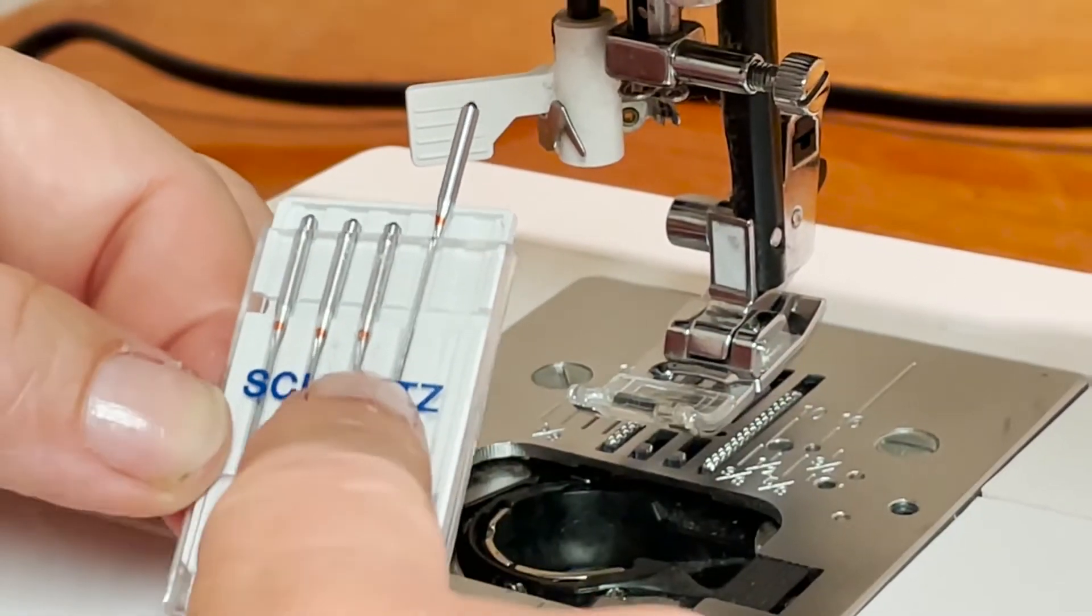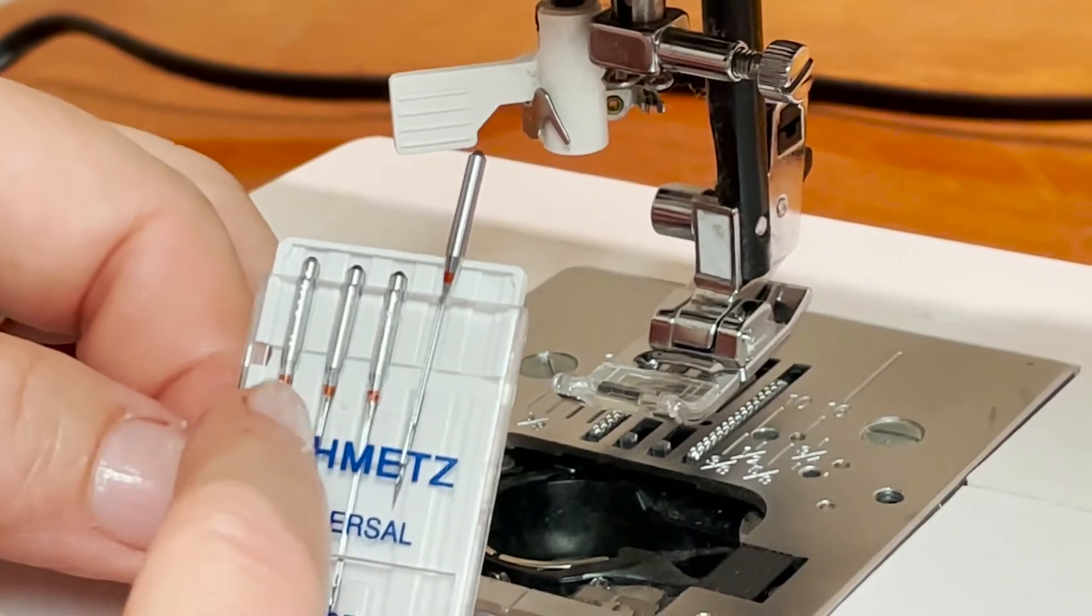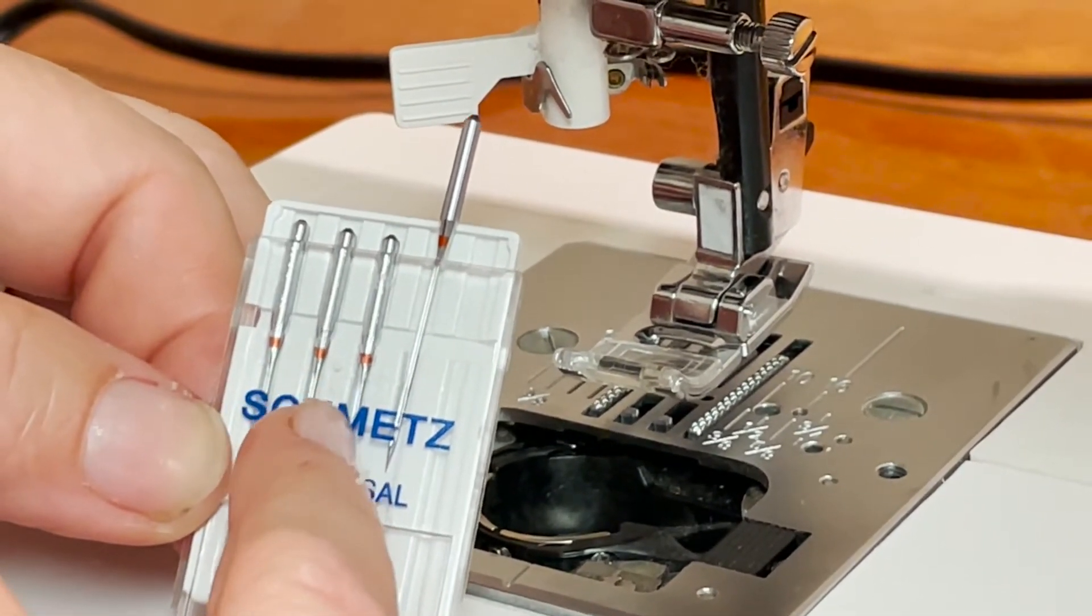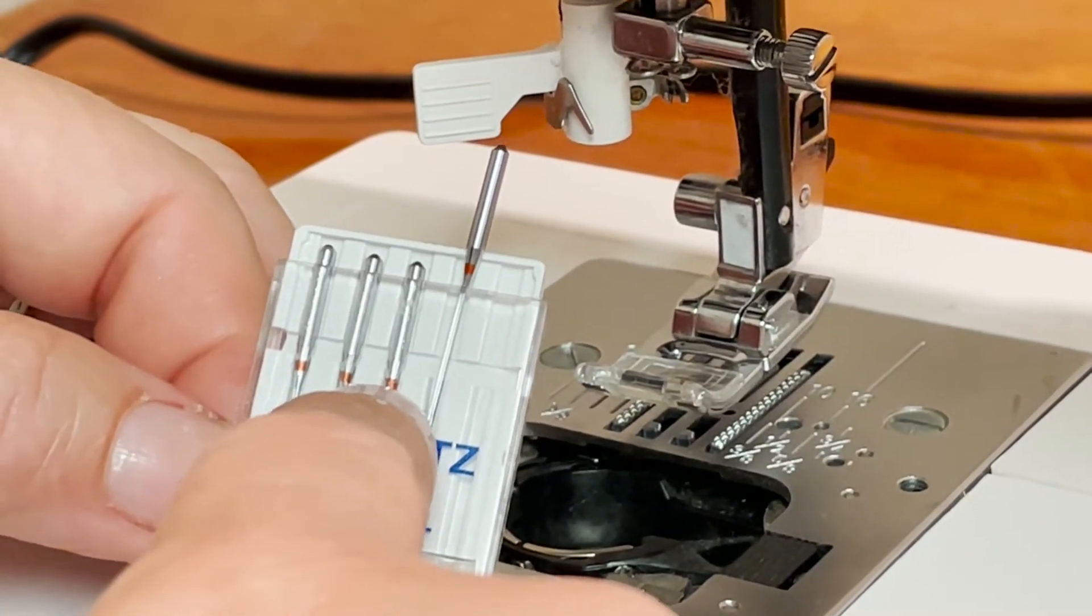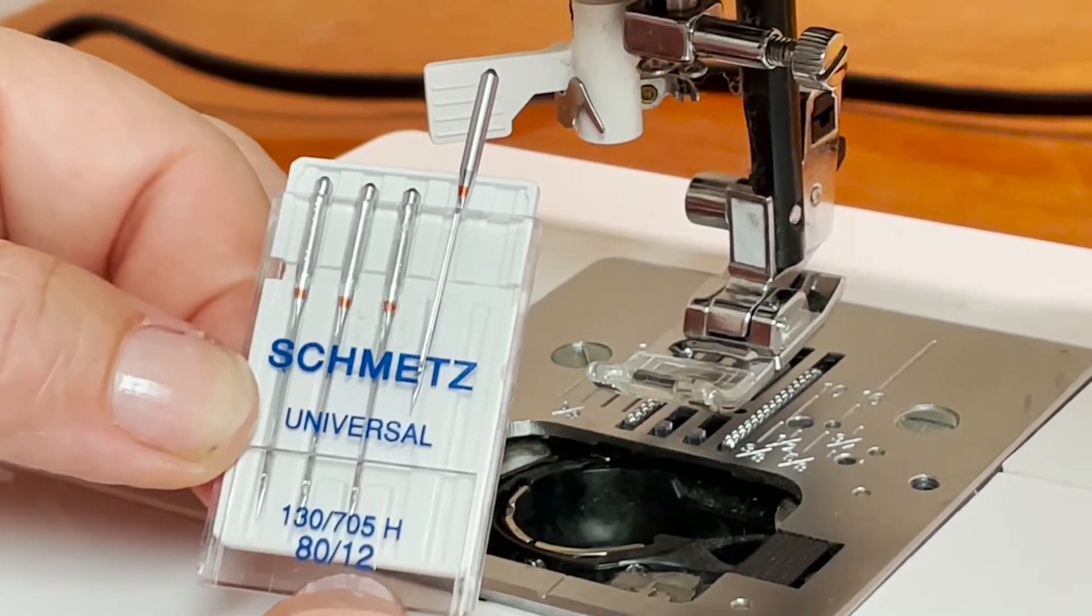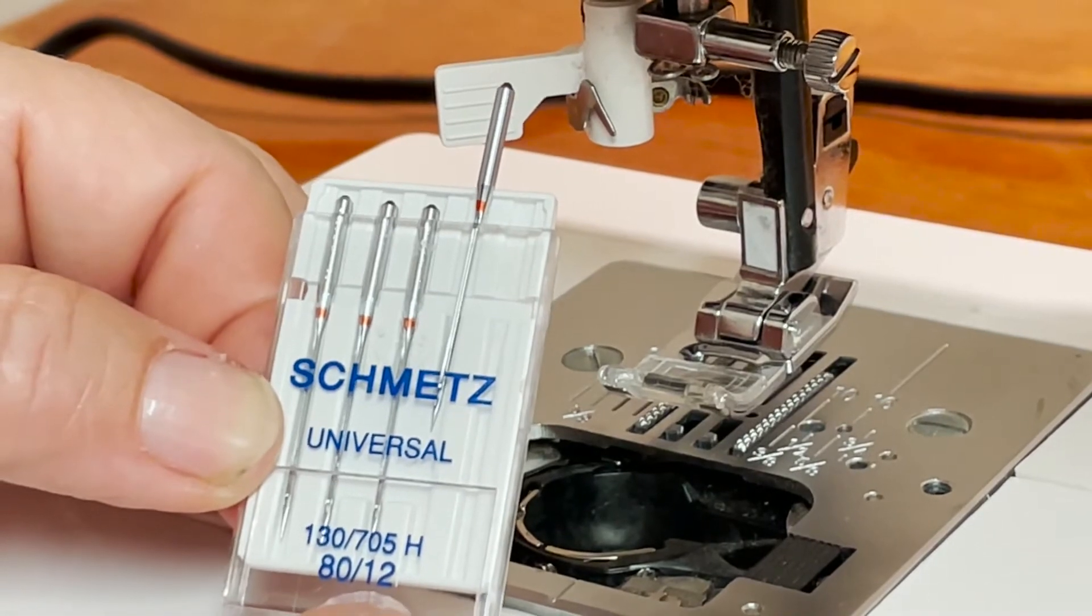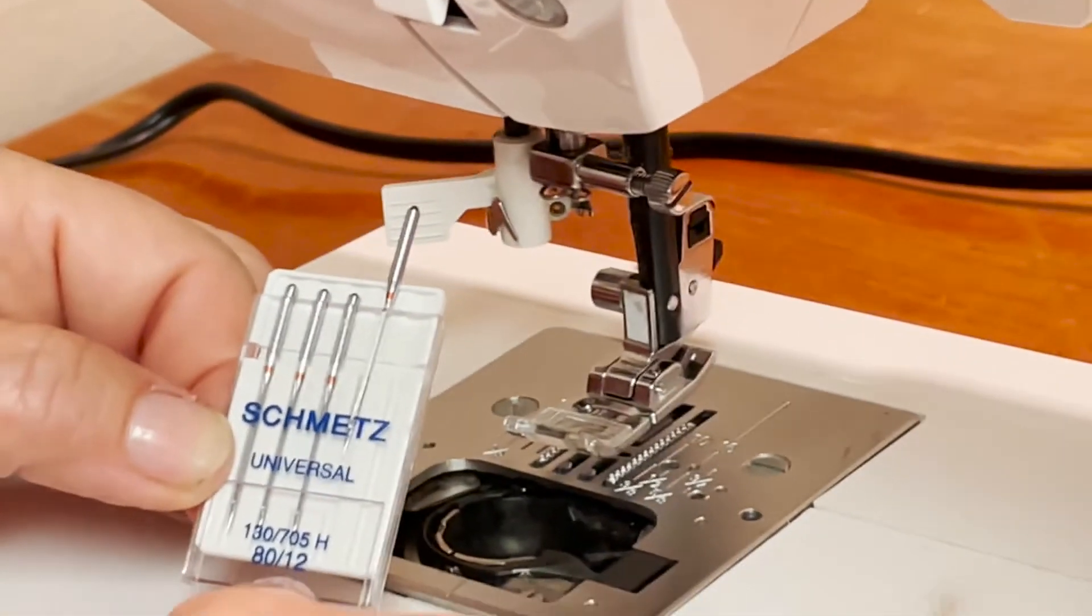To put a needle in our machines, we have special needles for sewing machines. They have a red band if they're for woven fabrics, and a yellow band if they're for knit fabrics. They come in different sizes. This is a 12, which is for average weight fabric. As they go up in size, they're for heavier weight fabrics.